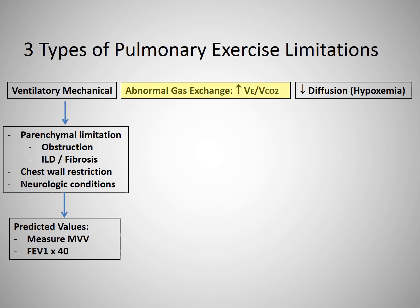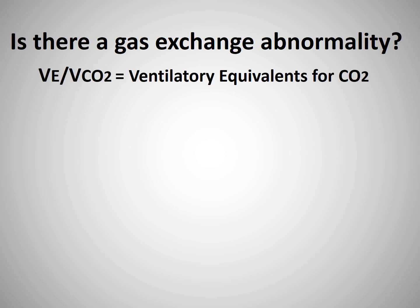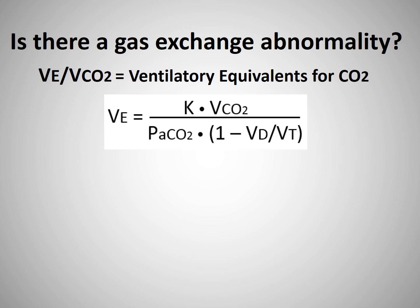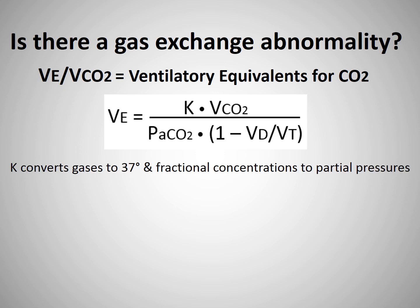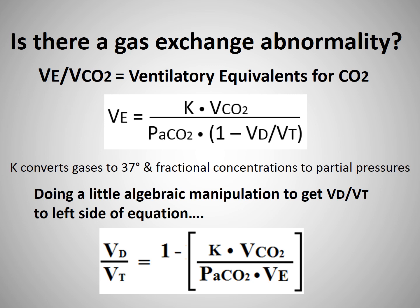The second type of pulmonary limitation is what we will classify as gas exchange abnormalities. We look for gas exchange abnormalities by examining the changes in the ratio of the VE to VCO2 throughout exercise. The terminology for this ratio is called the ventilatory equivalence for CO2. To understand the importance of this ratio, we need to go back to our basic respiratory physiology textbooks to find the formula for calculating minute ventilation or VE. We can see that there is a relationship of the VD to VT to the minute ventilation and VCO2 on the right side of the equation.